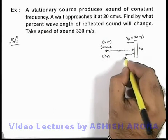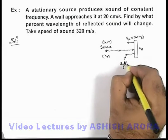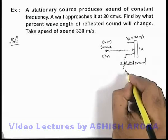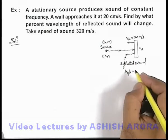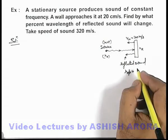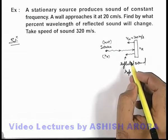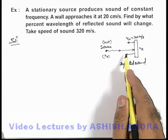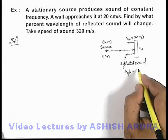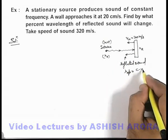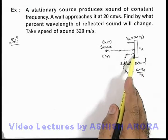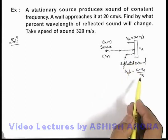Now we are required to find the wavelength of this reflected sound. And the wavelength of this reflected sound, λ apparent, can be simply written as: if we talk about the speed of sound with which it is moving away, this wavelength can be simply written as (c - vw) divided by nr, as now it is treated as a source.